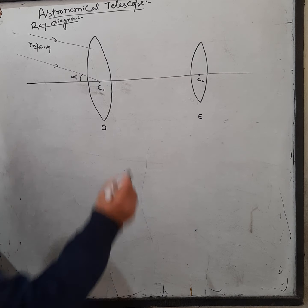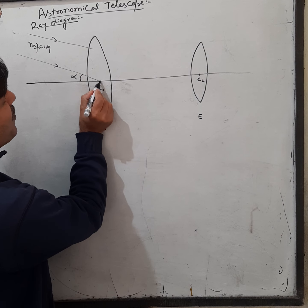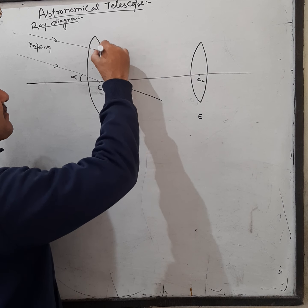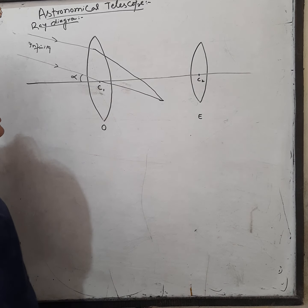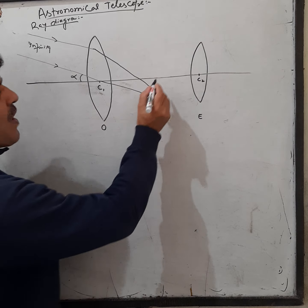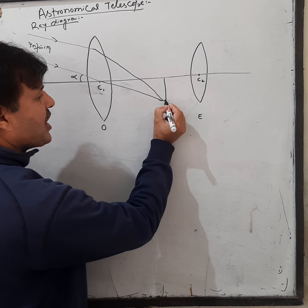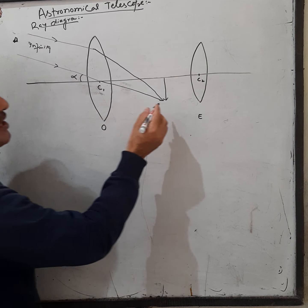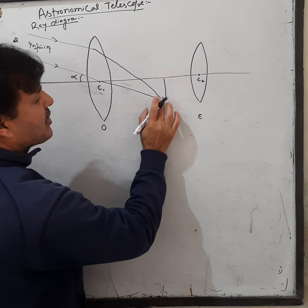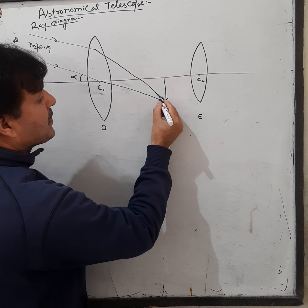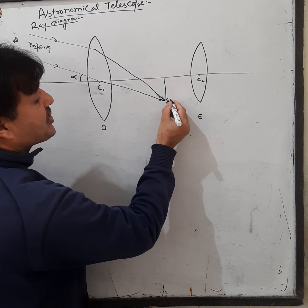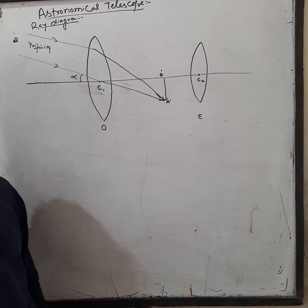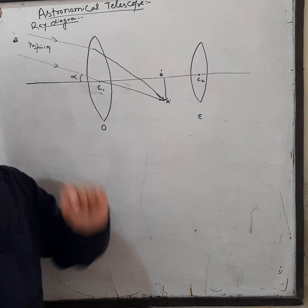Jab ye parallel rays objective lens se pass hoti hain, to ye converge karti hain. Jahan ye meet karti hain wahan ek real image ban jaati hai us distant object ki — jo star ya planet ho sakta hai. Yeh image a-dash b-dash hai.